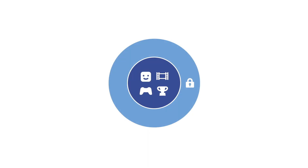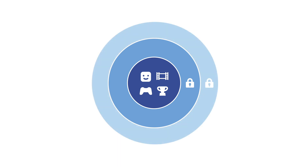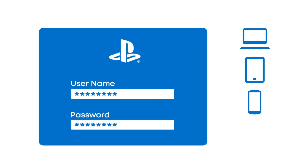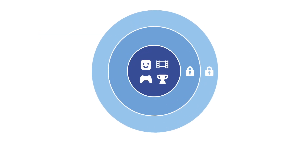Activating two-step verification adds a higher level of security to the account you use on PlayStation Network. With 2SV activated, when you sign into your account on a computer, tablet, mobile device, or PlayStation console, you'll receive a unique verification code either via message or your authenticator app. Enter that code to complete your account sign-in. It's an easy way to protect your account from access by intruders.